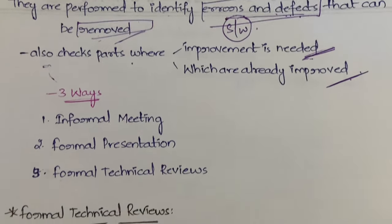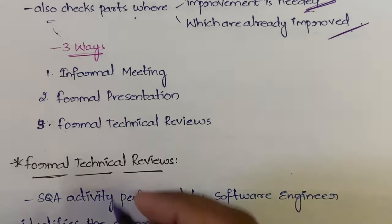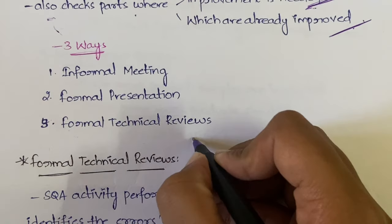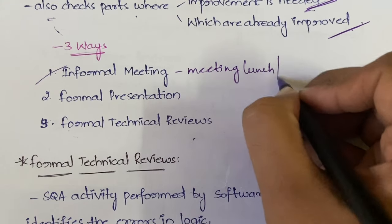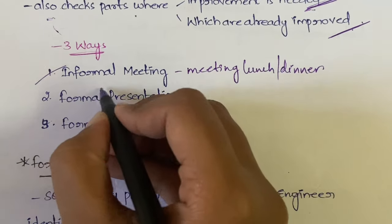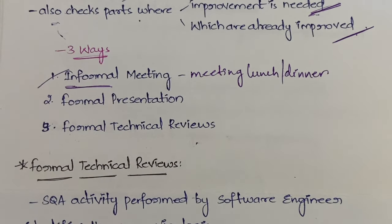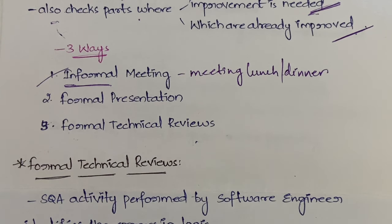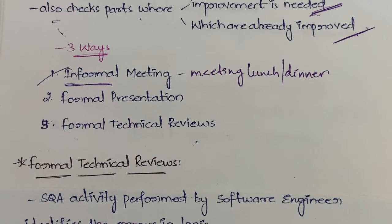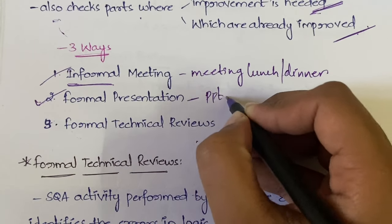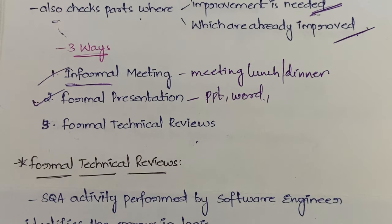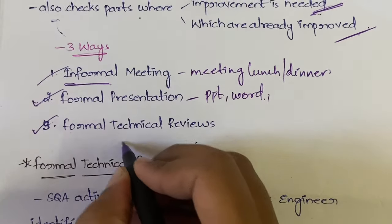Software reviews can be done in three ways. First is informal meeting — meeting outside the office, like for lunch or dinner. It is not formal; there is no planning, no documentation, just discussion. Second is formal presentation — you prepare a PowerPoint presentation, a Word document, or similar, and with the help of that you give the review of the software. Third comes formal technical review, which is very important and needs to be discussed in detail.